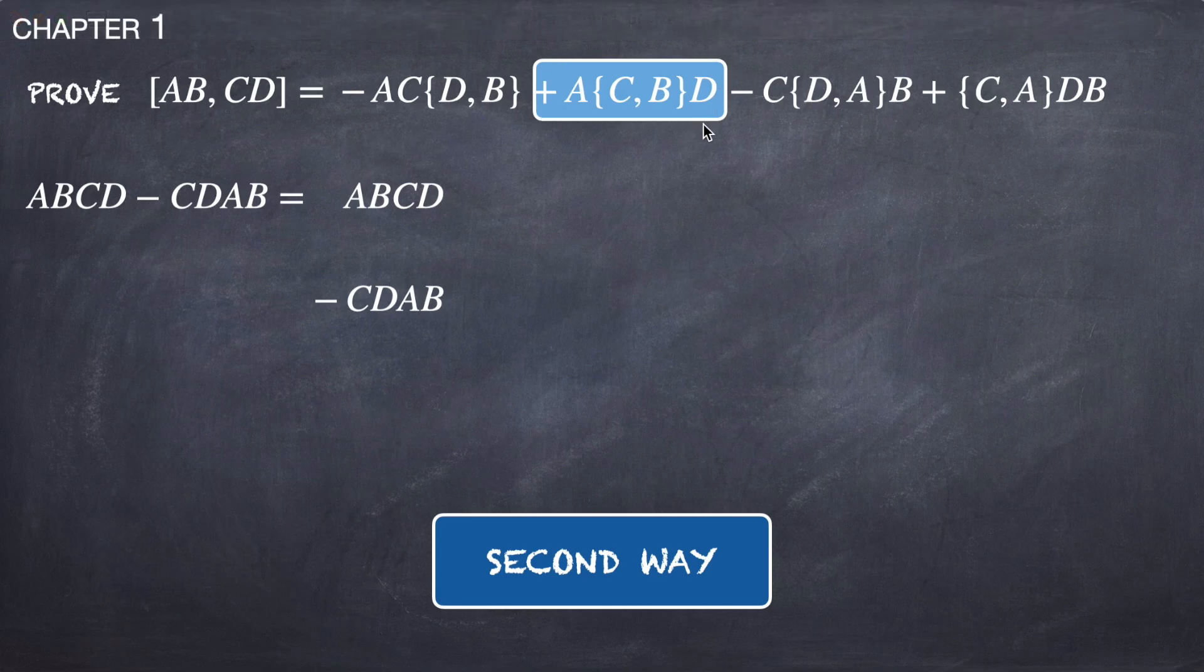For instance, let's consider this term here. We can write it as A{C,B}D plus ABCD. This ABCD is already here, so we can add ACBD and then we are going to form this anti-commutator, this term containing an anti-commutator.